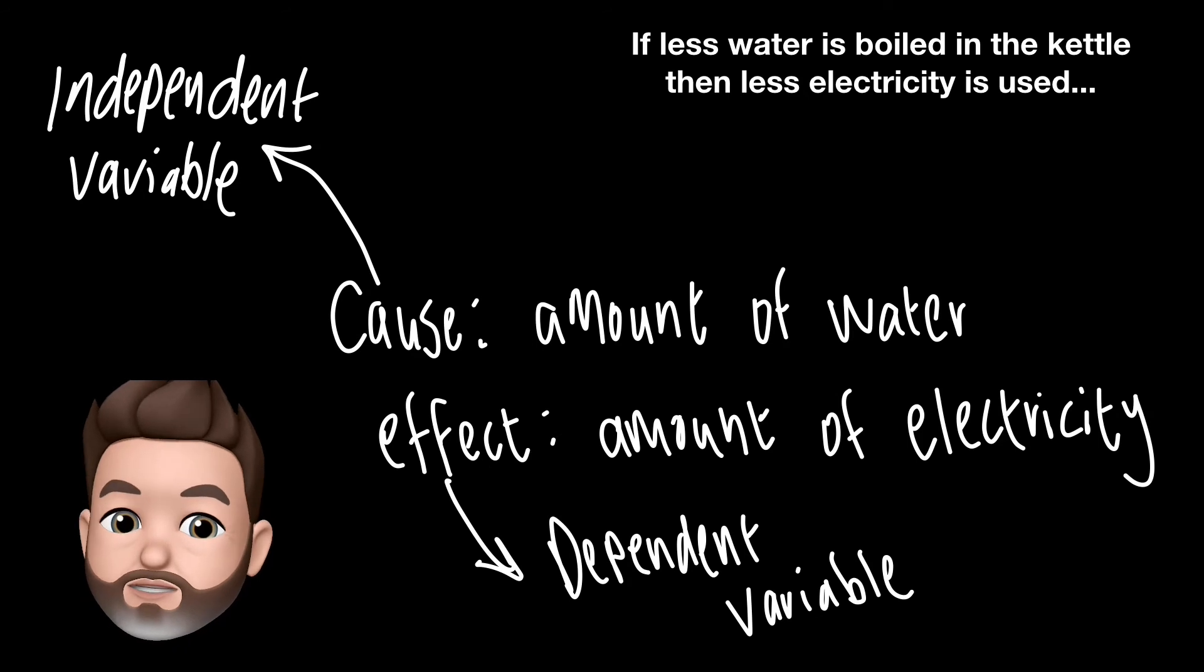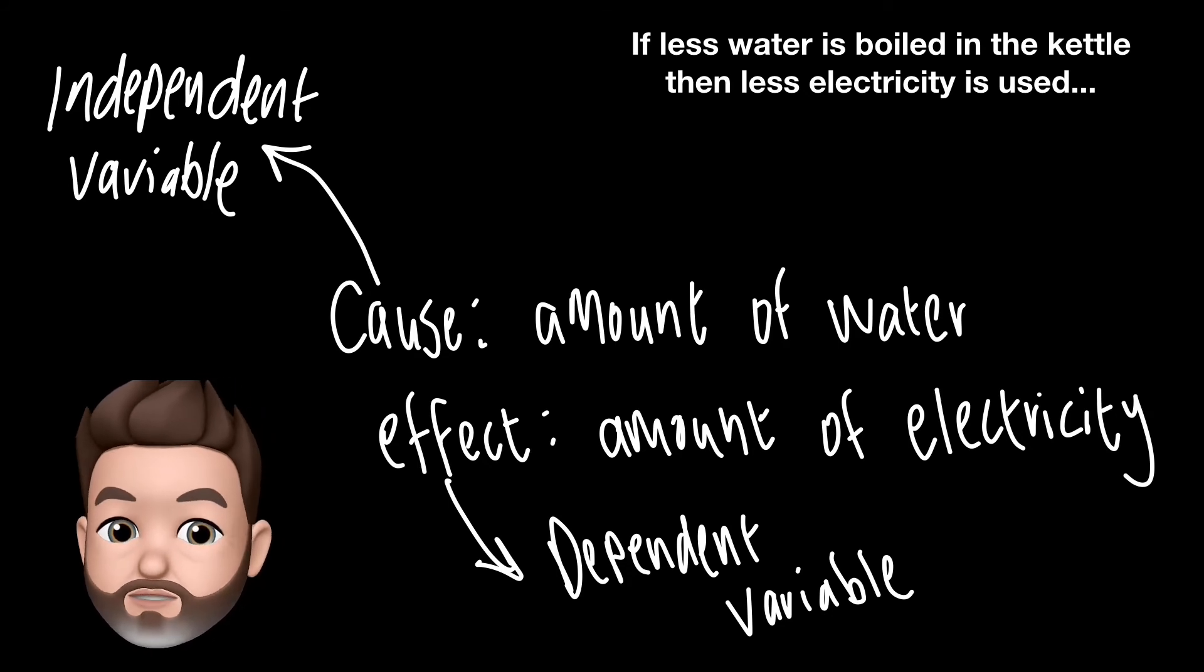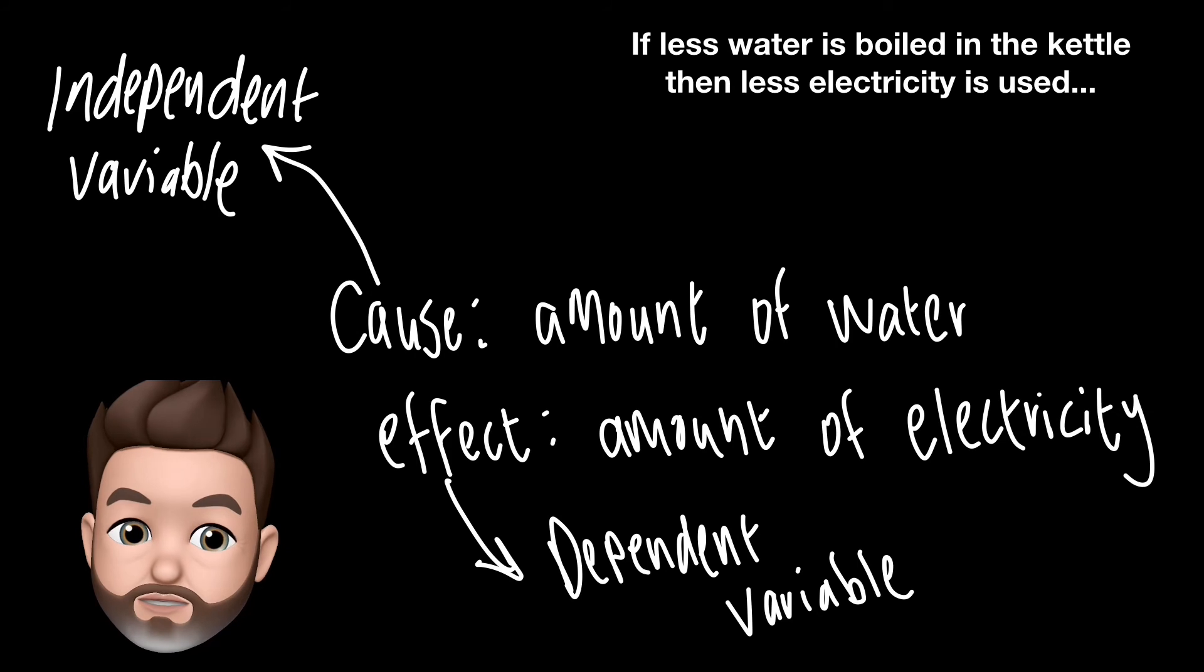So just to touch on quickly some of the science terminology that you need to know, and that is the independent variable and the dependent variable. You can identify these variables by looking at your hypothesis or your prediction. Remember the cause and the effect. The cause is what we call the independent variable. This is something that we change when we're doing investigations or experiments. And the effect, the thing that we're measuring is the dependent variable.